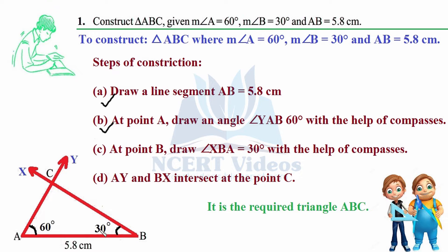To get 30 degrees at B, use angle bisection of 60 degrees — place the needle and cut intersections accordingly. We need not discuss this again as we have already studied and done such questions many times. Lines AY and BX will intersect at point C; no additional compass work is needed as the lines themselves intersect to give the remaining two line segments.